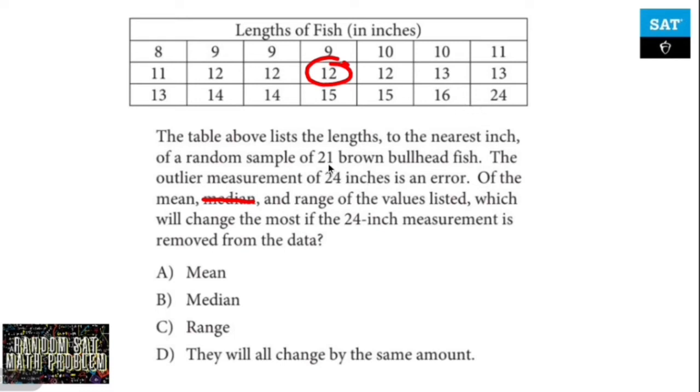However, if I change the range, which is the biggest number minus the smallest number, I right now have 24 minus 8, which means my range is 16. If I remove the 24, that range is now cut in half - it's a change of 8. So my range is absolutely 100% going to be the thing that changes the most.